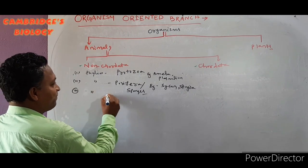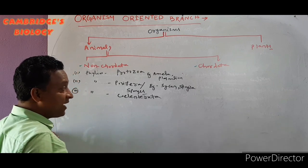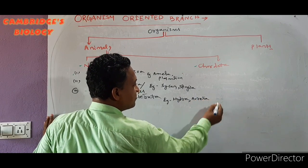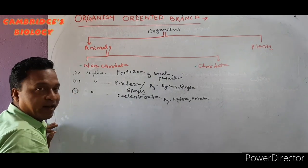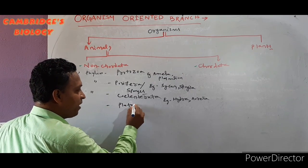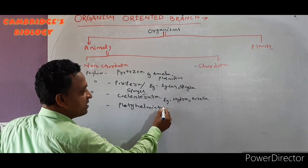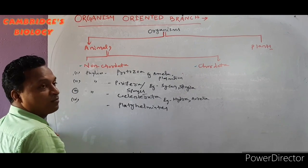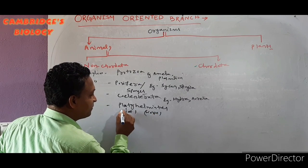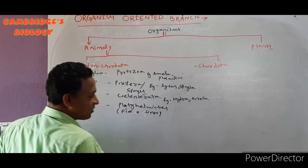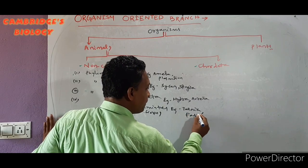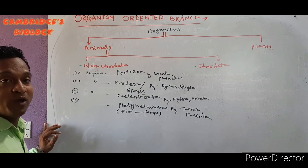The third phylum is Coelenterata — for example, Hydra and Aurelia. The fourth phylum is Platyhelminthes, or flatworms — 'platy' means flat, 'helminthus' means worm. Example: Taenia.